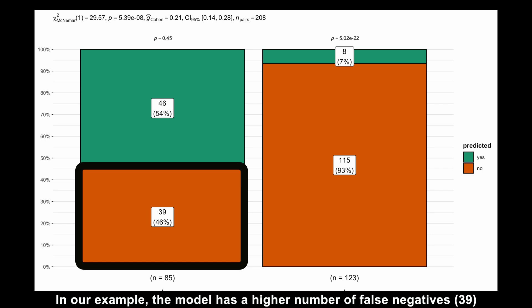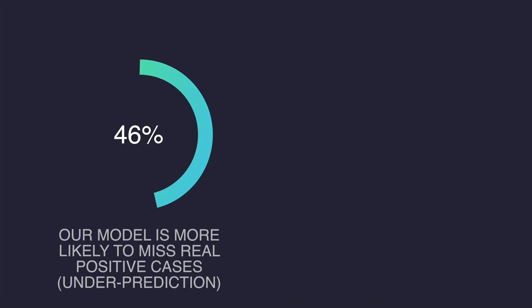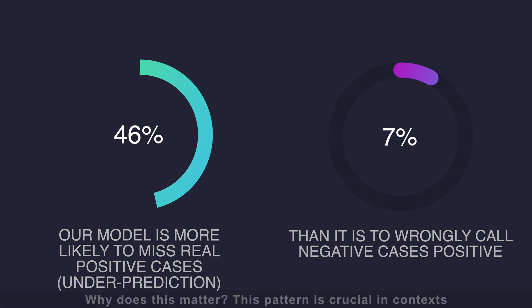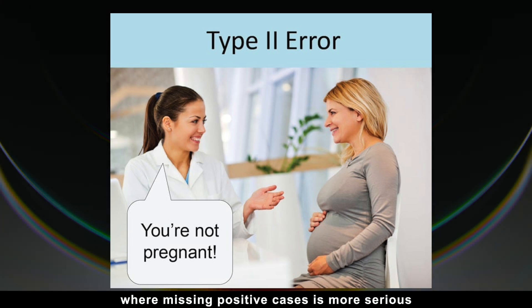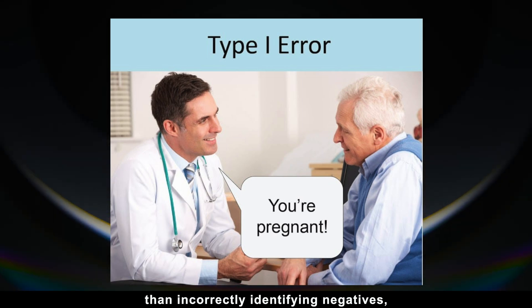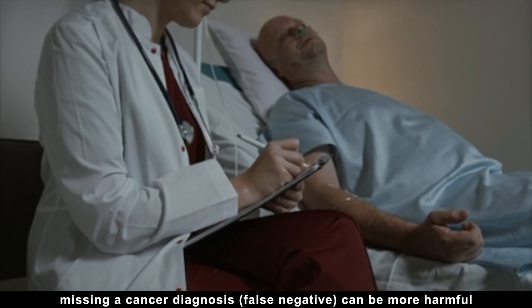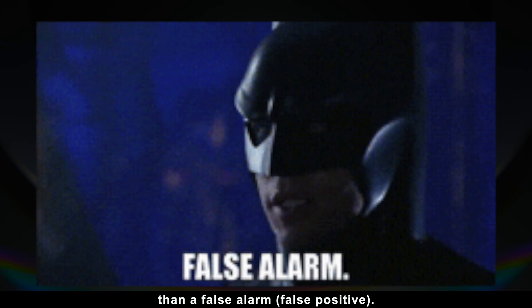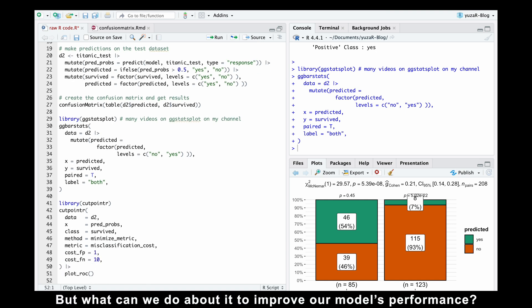In our example, the model has a higher number of false negatives, 39, compared to false positives, 8. This means our model is more likely to miss real positive cases than it is to wrongly call negative cases positive. Why does this matter? This pattern is crucial in contexts where missing positive cases is more serious than incorrectly identifying negatives, such as in medical diagnostics. For example, missing a cancer diagnosis, false negative, can be more harmful than a false alarm, false positive.